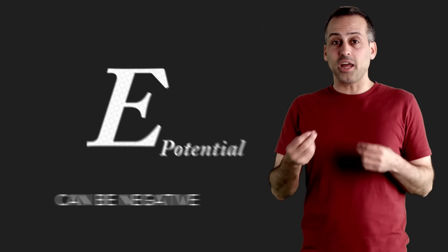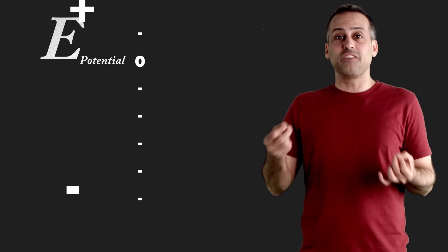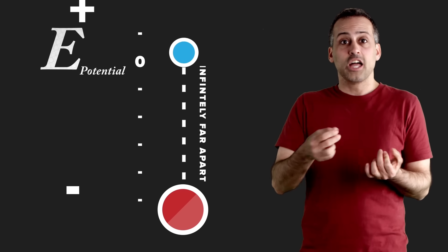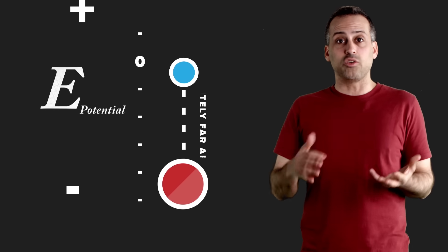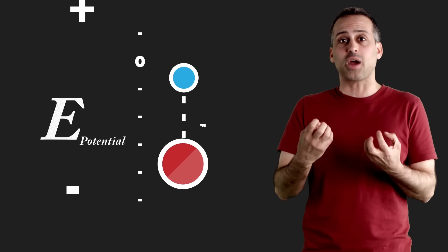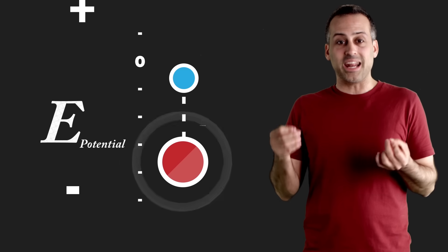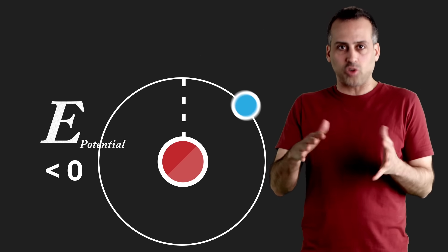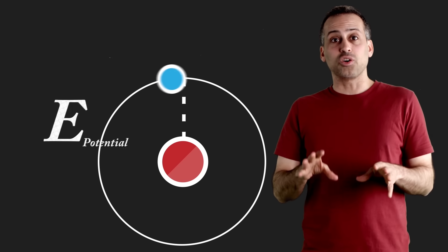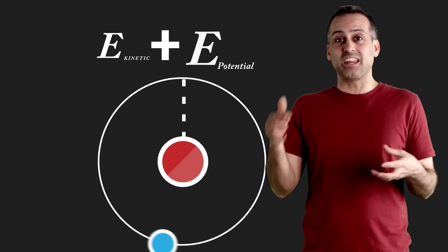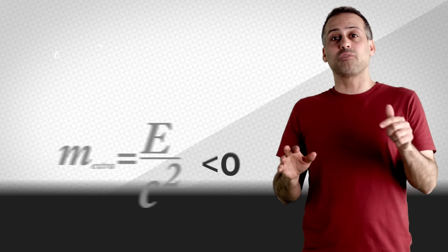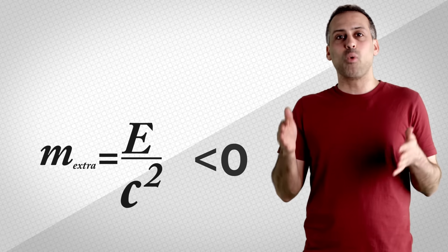Suppose we call the potential energy of a proton and electron zero when they're infinitely far apart. Since they attract each other, their electric potential energy will drop when they get closer together, just like your gravitational potential energy drops when you get closer to the surface of Earth, which is also attracting you. So the potential energy of the electron and proton in a hydrogen atom is negative. Now the electron in hydrogen also has kinetic energy, which is always positive, due to its movement around the proton. But as it turns out, the potential energy is negative enough that the sum of the kinetic and potential energies still comes out negative. And therefore, m equals E over c squared also comes out negative. And a hydrogen atom weighs less than the combined masses of its parts. Booyah.